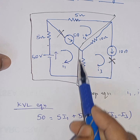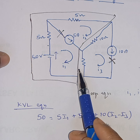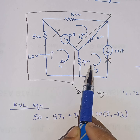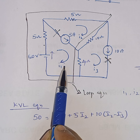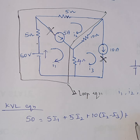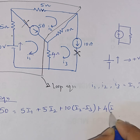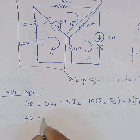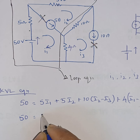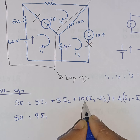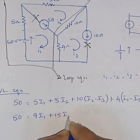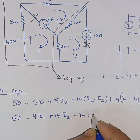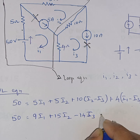For the 4-ohm branch, which is shared between loop 1 and loop 3, the potential drop is 4·(I1 − I3). Consolidating the full KVL equation: 50 = 5·I1 + 4·I1 + 5·I2 + 10·I2 − 10·I3 − 4·I3, which simplifies to 50 = 9·I1 + 15·I2 − 14·I3. This is the first equation.